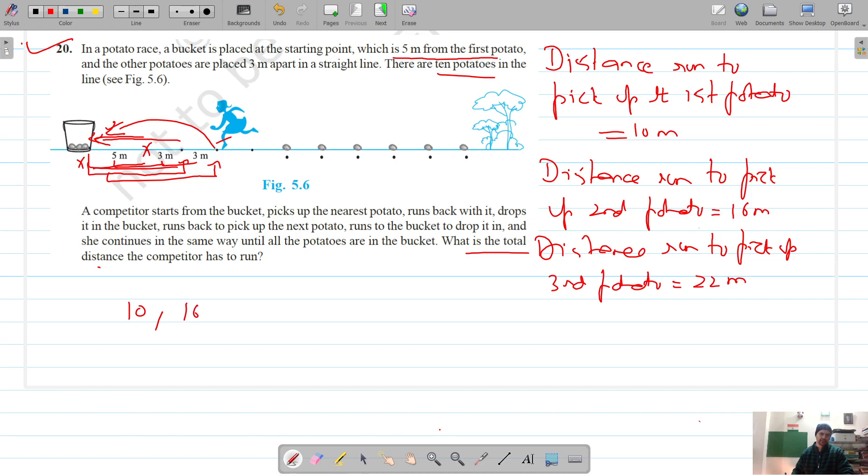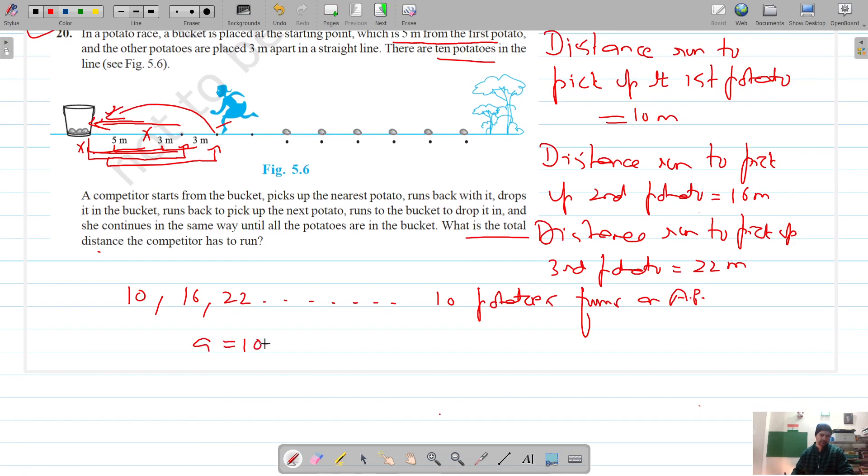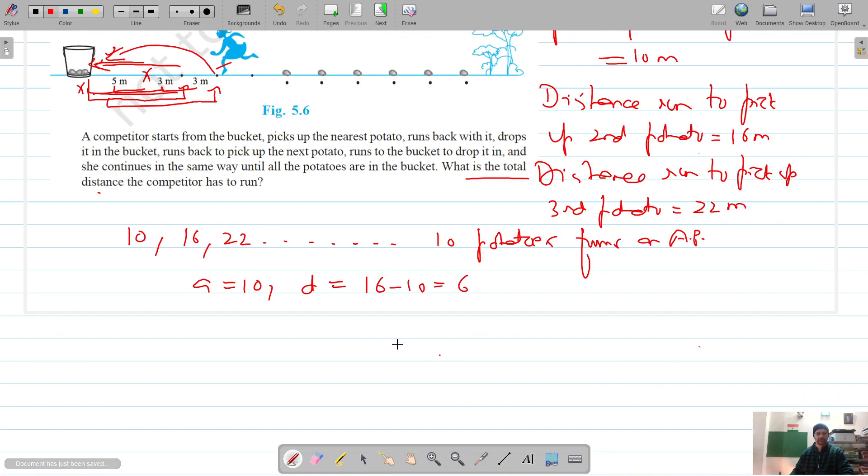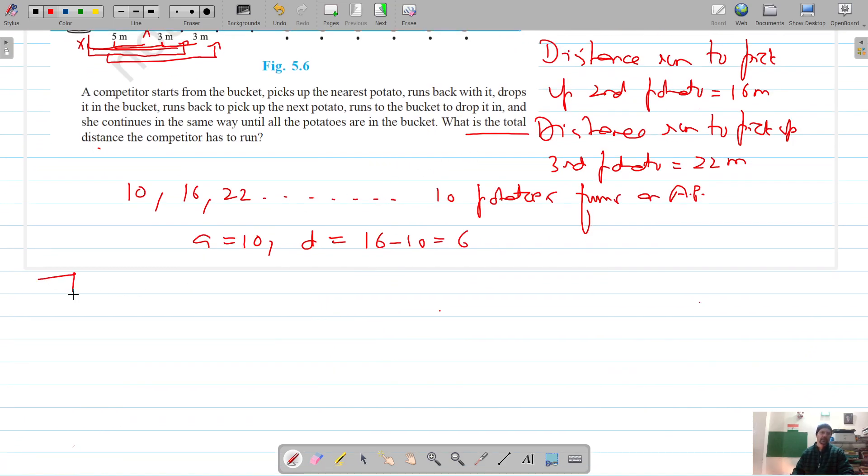So now these distances - that is 10 meters, 16 meters, 22 meters - for 10 potatoes, it forms an AP. If it's an AP, we should know the first term and the common difference, that is 6. Total distance competitor has to run is the sum of this AP for 10 terms.